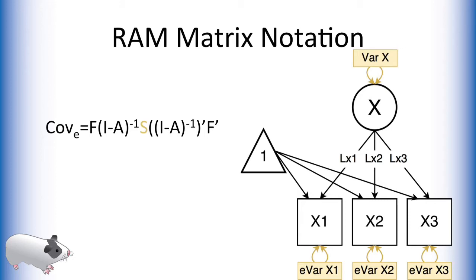The next matrix, S, represents the symmetric arrows within our model. In this case, it represents the variances of our variables of interest.